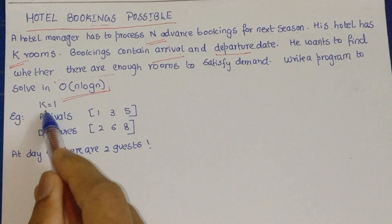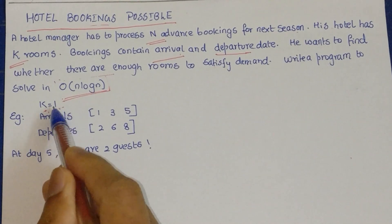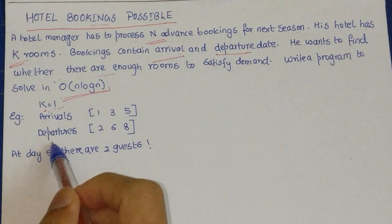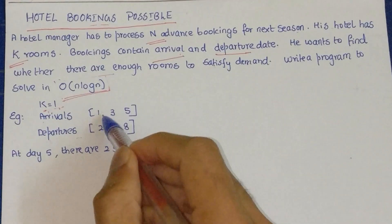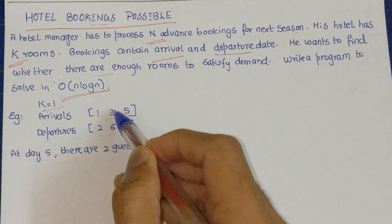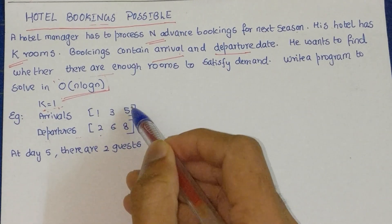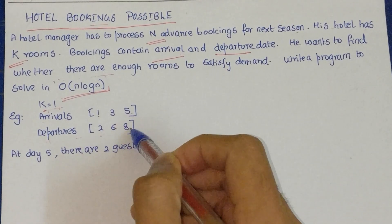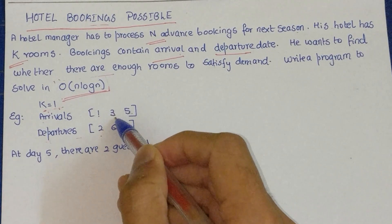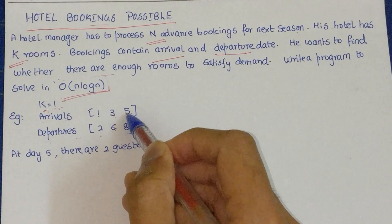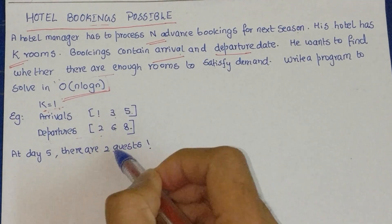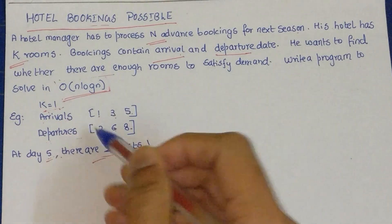Looking at the inputs: K equals 1, meaning the hotel has only one room. Each guest has an arrival and departure. Guest 1 comes on the 1st and leaves on the 2nd. Guest 2 comes on the 3rd and leaves on the 6th. Guest 3 comes on the 5th and leaves on the 8th. Since guest 2 leaves on the 5th and guest 3 arrives on the 5th, two people are at the hotel at the same time, so it should return false.